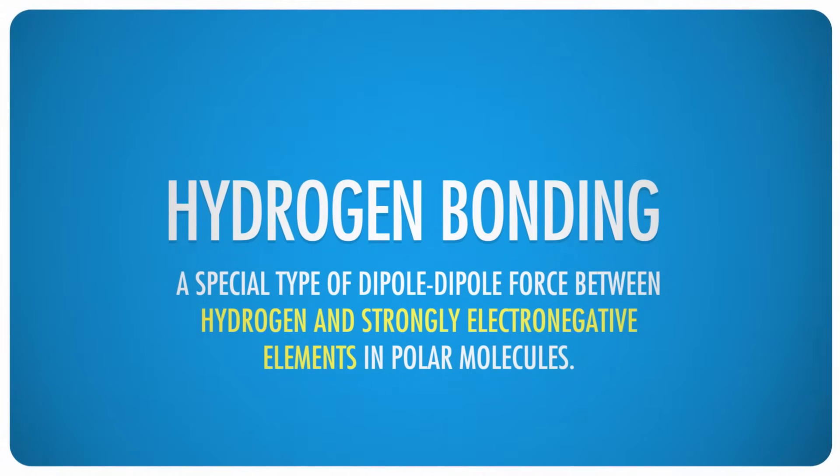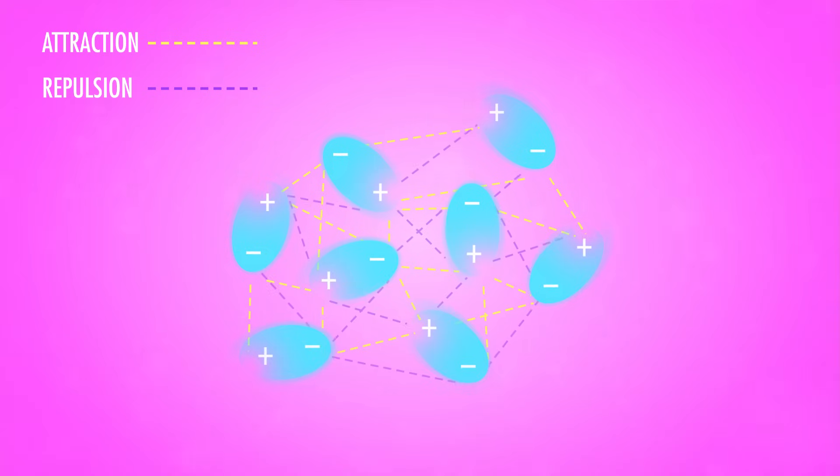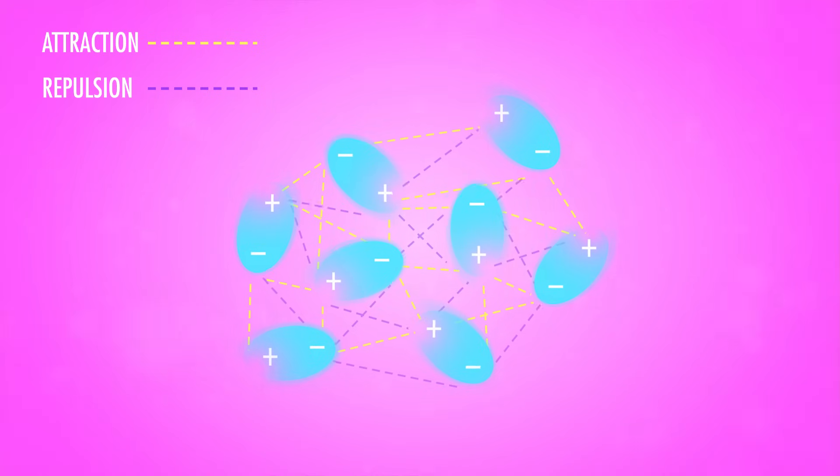Then there's hydrogen bonding, a special type of dipole-dipole force, one that occurs on polar molecules that contain hydrogen and strongly electronegative elements such as nitrogen, oxygen, or fluorine. Because of the very small size of the hydrogen atom and the extreme attraction of its electrons to those other atoms, the dipoles in these molecules are extra strong, so we actually call it a bond. Really though, hydrogen bonds aren't chemical bonds in the same sense that ionic and covalent bonds are, but they are the strongest interactions that occur between molecules. Water, for example, is very well known for its tendency to form hydrogen bonds.